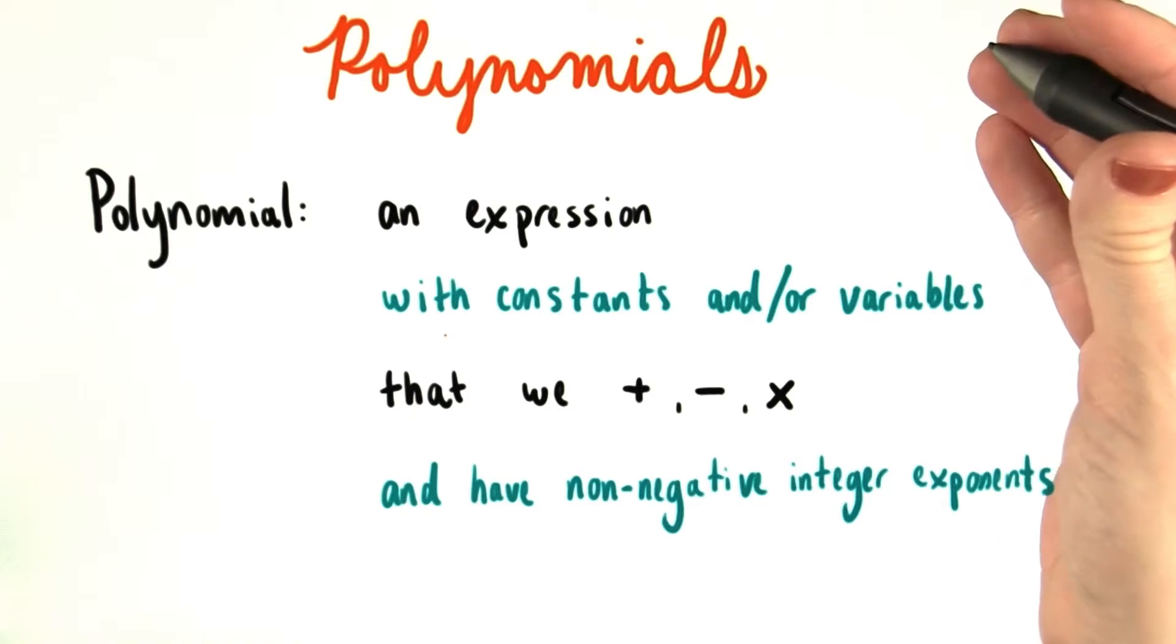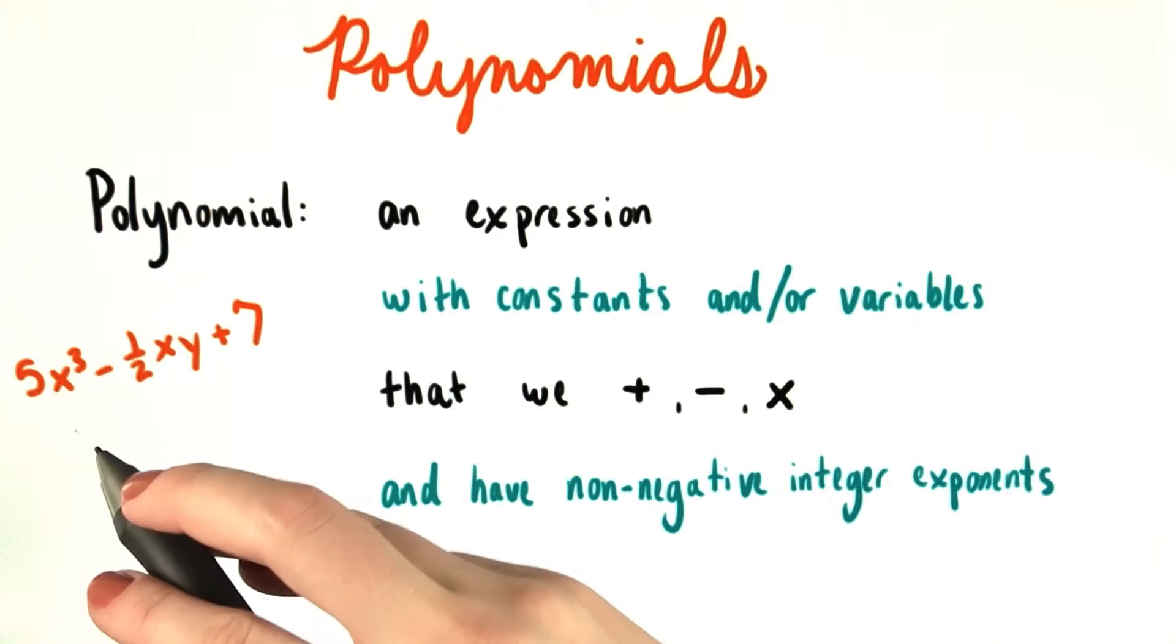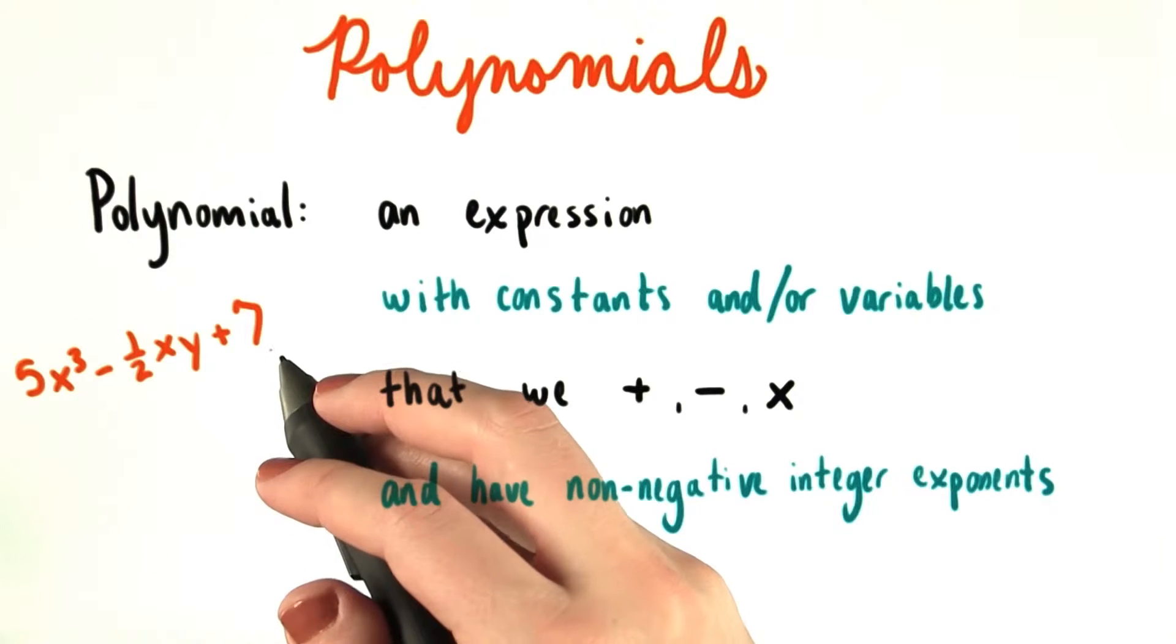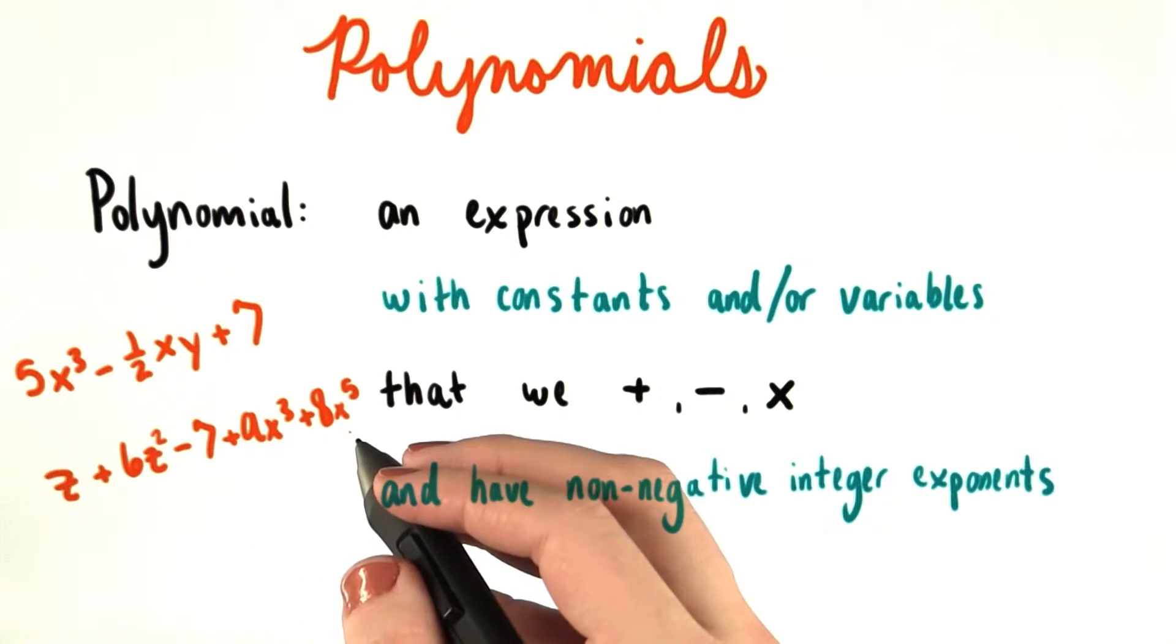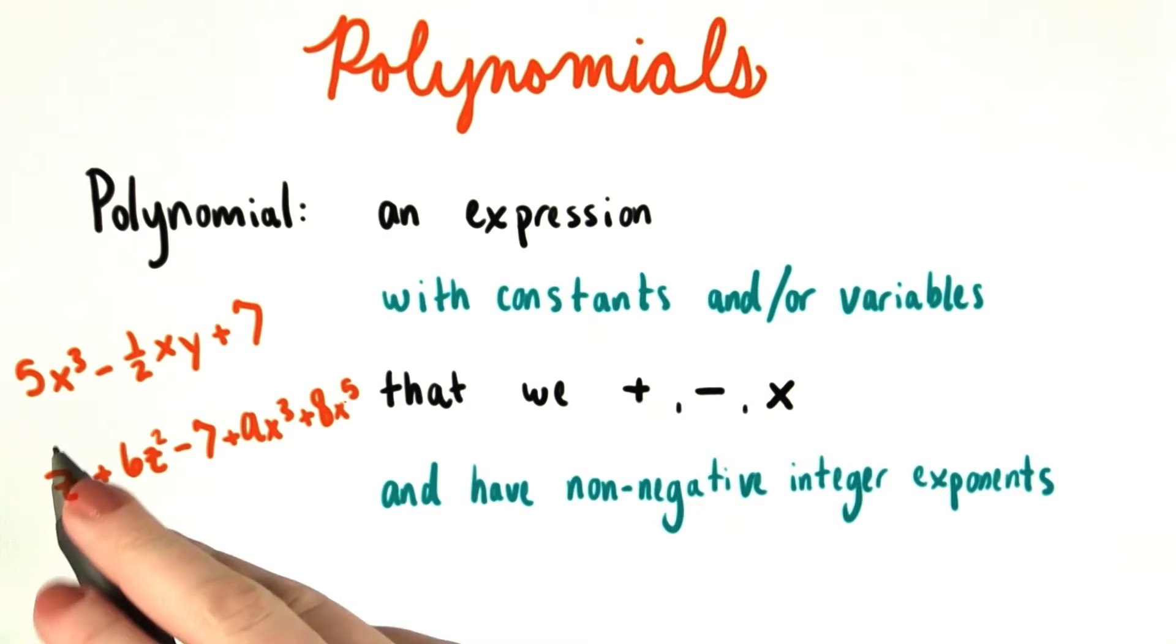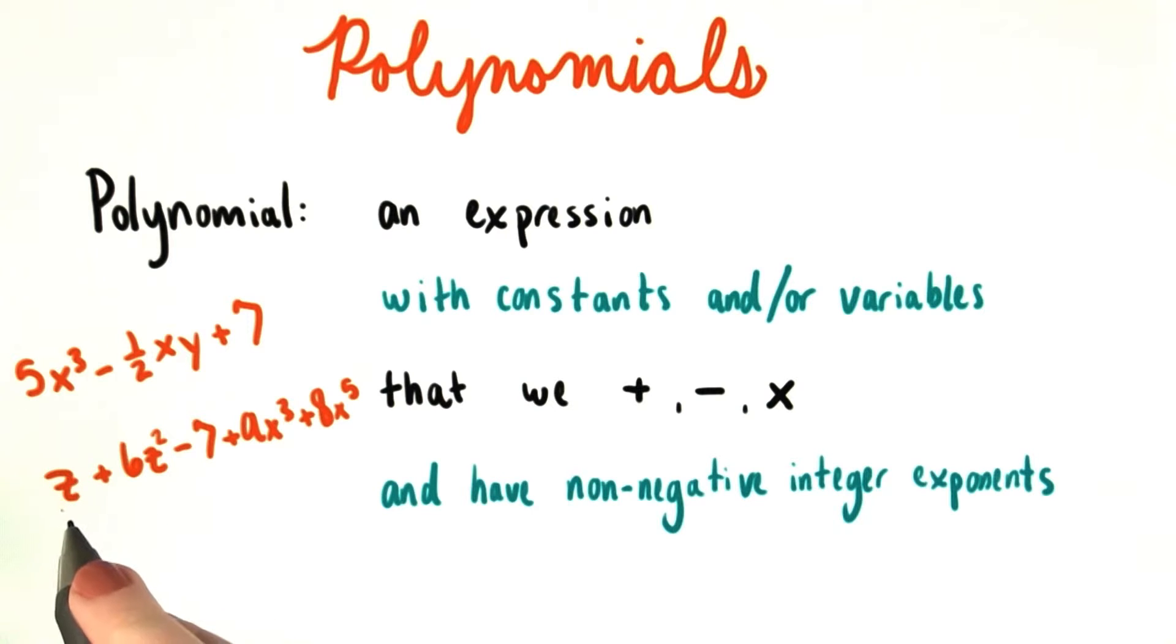So as an example of a polynomial, we might have something like 5x cubed minus 1 half xy plus 7. Or maybe z plus 6z squared minus 7 plus 9x cubed plus 8x to the fifth. So some polynomials that we see will have more than one variable in them, like these two right here.